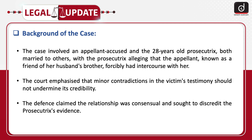Let's look at the background of the case. The case involved an appellant accused and a 28-year-old prosecutrix, both married to others, with the prosecutrix alleging that the appellant — known as a friend of her husband's brother — had intercourse with her. The court emphasized that minor contradictions in the victim's testimony should not undermine its credibility.